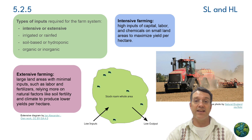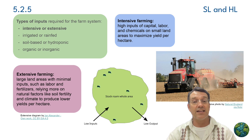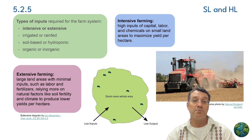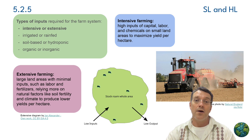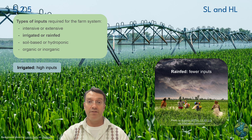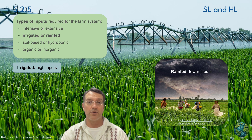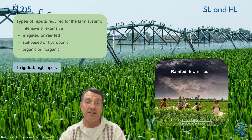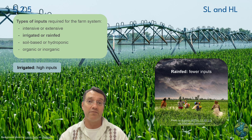Here you can see the contrast between intensive and extensive farming systems. Intensive farming involves high inputs of capital, labor, and chemicals on relatively small areas to maximize yield per hectare. Extensive farming uses large land areas with minimal inputs, relying more on natural factors like soil fertility and climate, and typically produces lower yields per hectare but requires far less external inputs. This image dramatically shows the difference between irrigated and rain-fed agriculture. Irrigation represents high inputs — the infrastructure, energy, and water management required — while rain-fed agriculture requires fewer inputs but depends entirely on natural precipitation patterns, making it more vulnerable to climate variability.